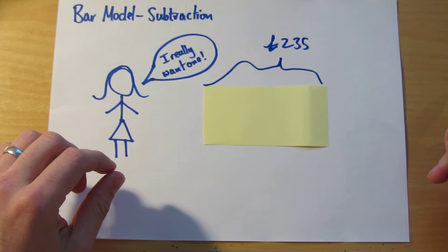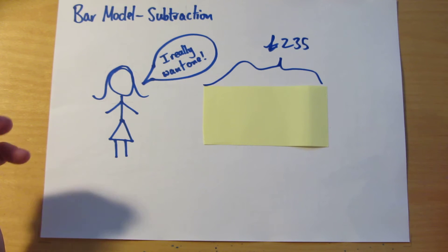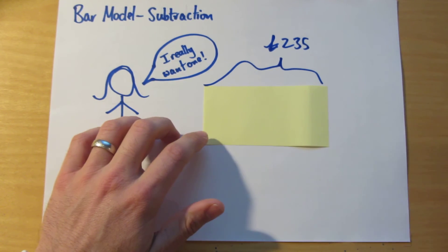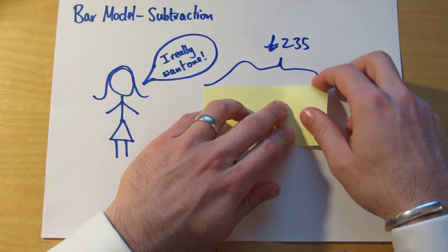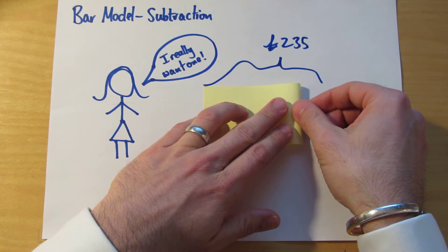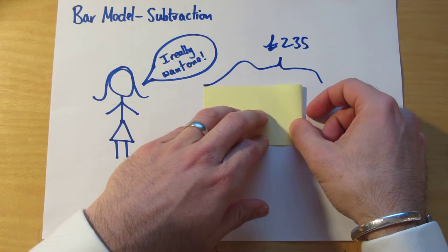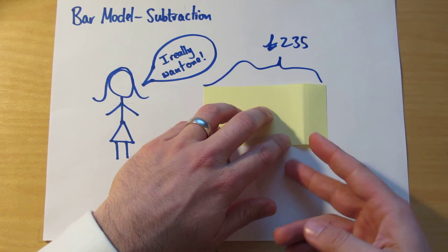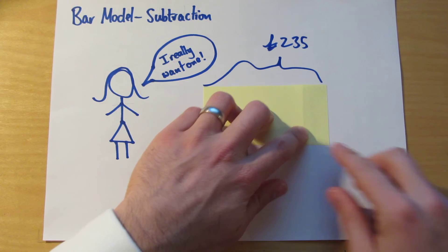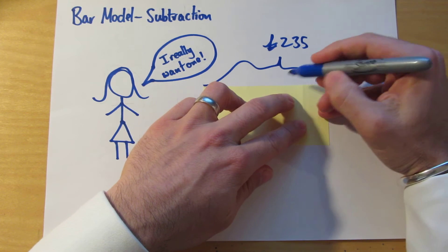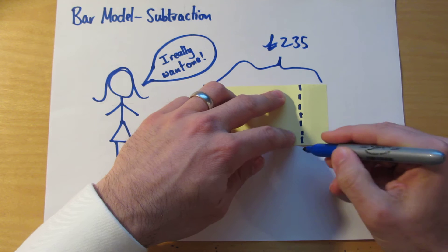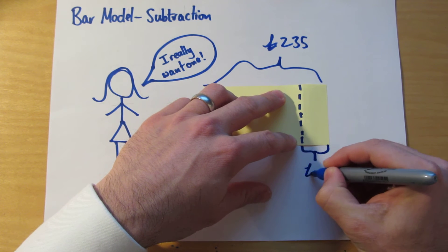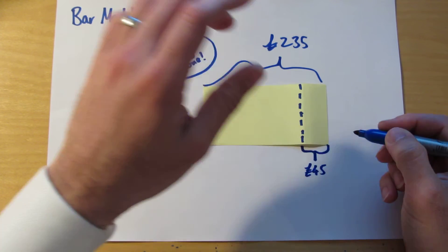And the question is, if she spends £45 on that thing that she's desperately wanting, how much has she still got saved? Well, we've got a question here as to how we represent the fact that she's going to spend £45. I could fold back £45 worth to show that this is what she's got left. I could get some scissors and cut that off. But I think probably what would be useful, so that I've got it on the page, is if I just do a dashed line here. And I say that this represents £45, that's the money that she spends on that thing that she wanted.